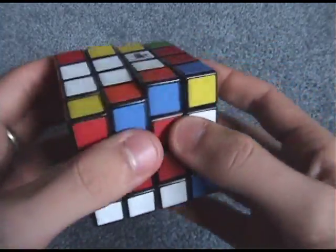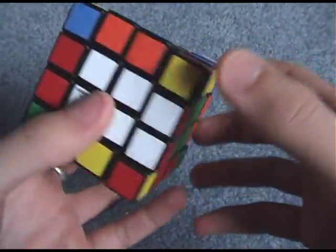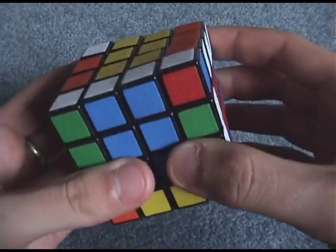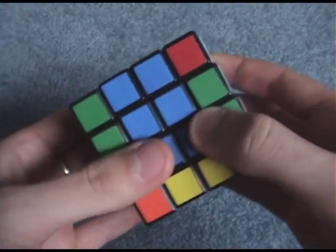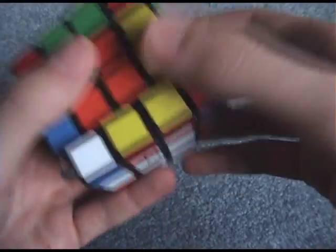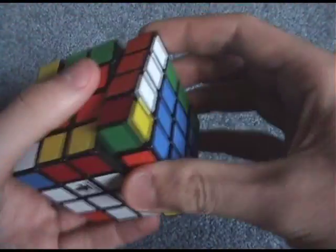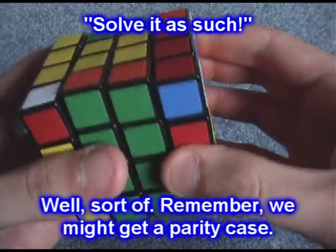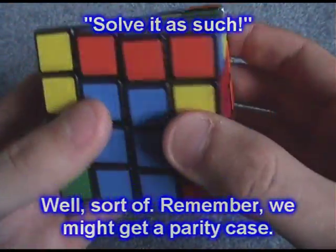Okay, so at this point we're ready to finish the solve, and this is just a really simple thing. By turning the outside layers, we can pretend it's a 3x3 and solve it as such. Okay.